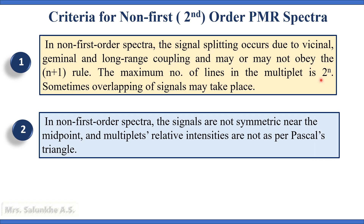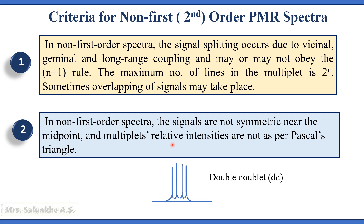The second criteria is that in non-first order spectra, the signals are not symmetric near the midpoint and the multiplet's relative intensities are not as per Pascal's triangle. In case of second order spectra, instead of a triplet, sometimes a double doublet is observed in the spectra — that is, it does not obey the N plus 1 rule.